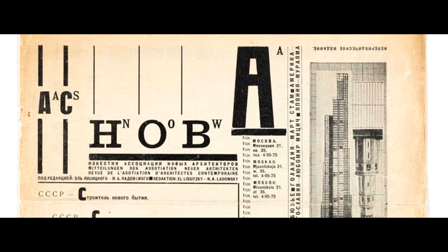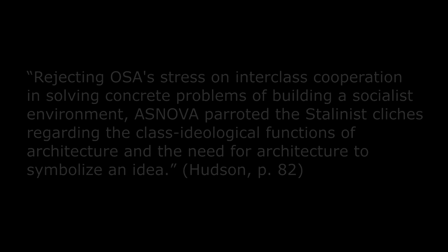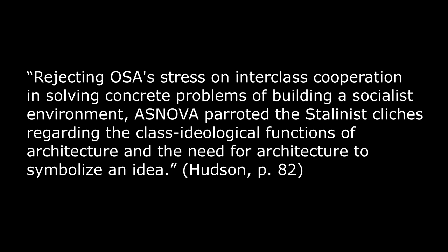While it was not incorrect to accuse the constructivists of mechanism, the formalists themselves were not free from serious mistakes. ASNOVA waged an ultra-leftist campaign against their constructivist rivals, interpreting dialectics in a voluntarist way, claiming all tradition must be destroyed and using class-conflict terminology. The constructivists, on the other hand, utilized Bukharin's theories of equilibrium and class harmony. Hudson writes that rejecting OSA's stress on inter-class cooperation in solving concrete problems of building a socialist environment, ASNOVA parodied Stalinist clichés regarding the class ideological functions of architecture.